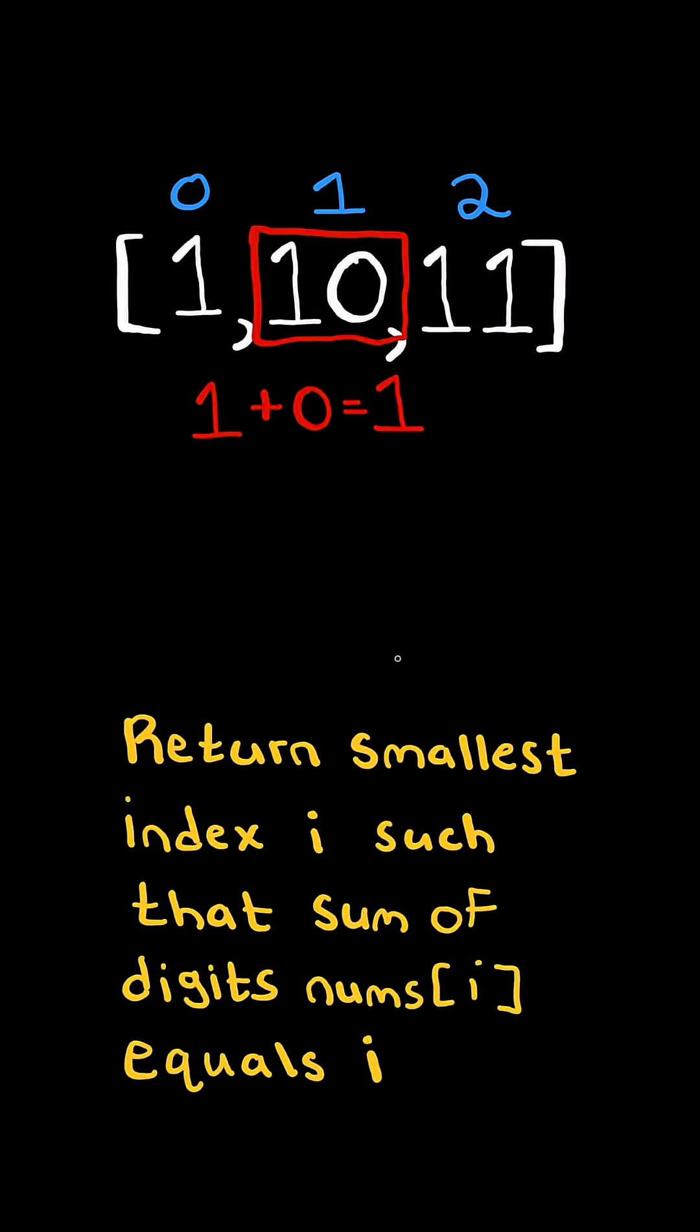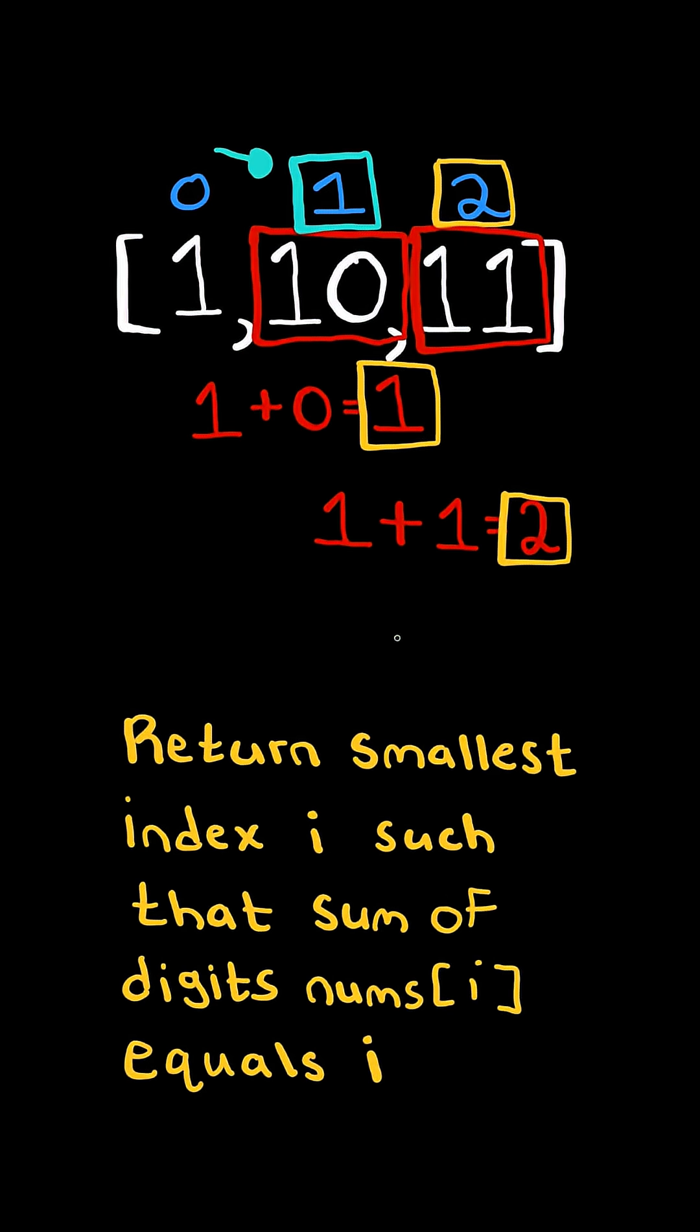For example, the sum of the digits of 10 is 1, and it equals the index. Similarly for 11, the sum of its digits equals the index. In this case, we return the smallest index that satisfies this condition.